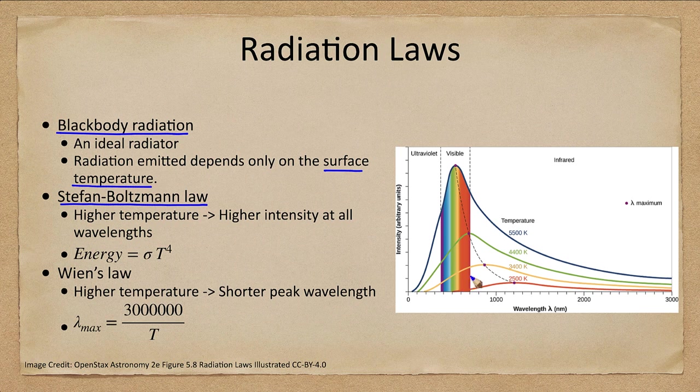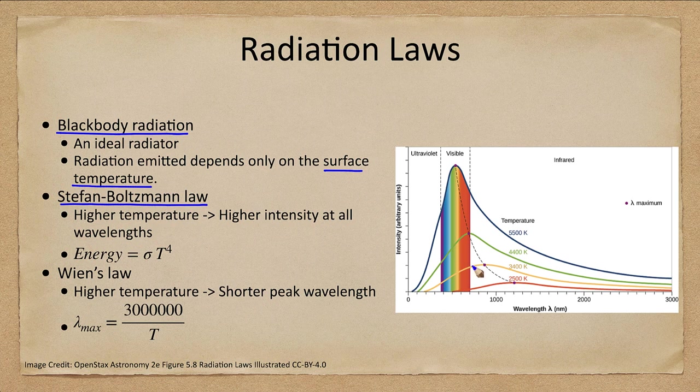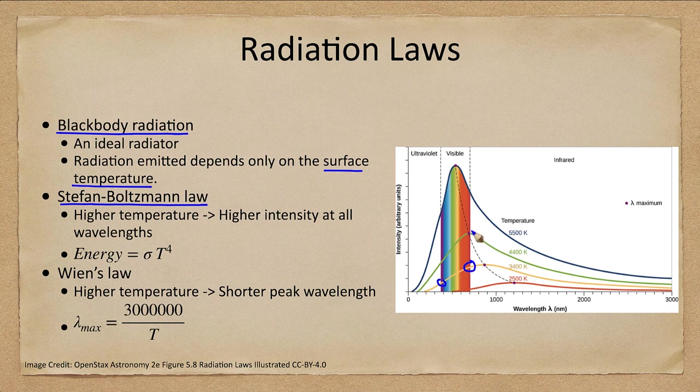but would still emit a little bit. So what would we see? If we looked at a star like one of these, they're emitting a lot of red light, and very little blue and violet. So these are going to appear red to our eyes,